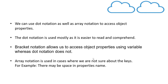Whereas in bracket notation, whatever is placed inside those brackets is evaluated to get the name of the property. Array notation is also used in cases where we are not sure about the keys — for example, where there is a space between the property name or there is a special character inside a property name. In those scenarios, we cannot use dot notation.